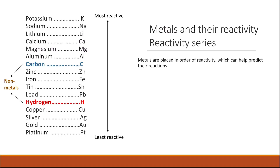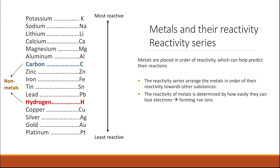Reactivity series. The metals are placed in order of reactivity, which can help predict their reactions. The reactivity series arranges the metals in order of their reactivity towards different substances. The reactivity of metals is determined by how easily they can lose electrons to form positive ions.